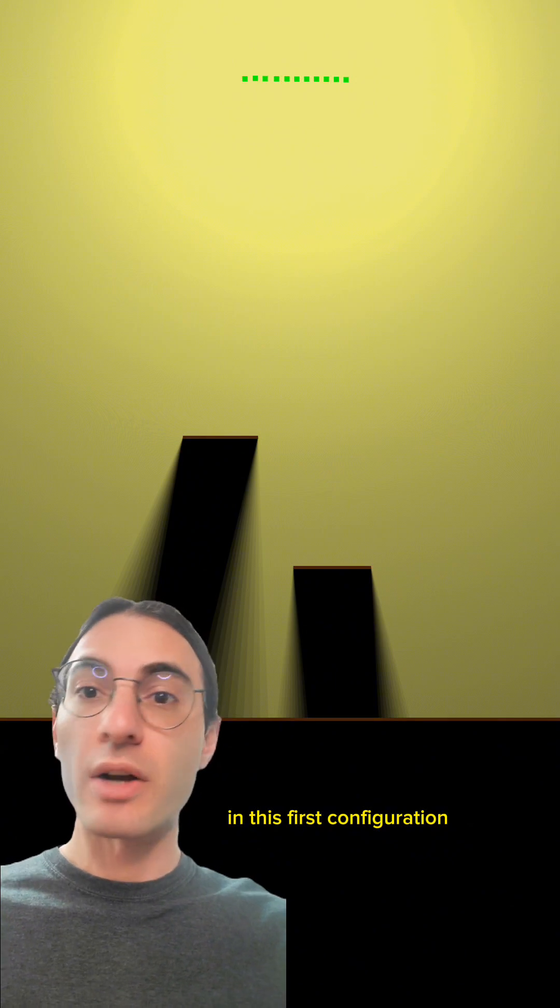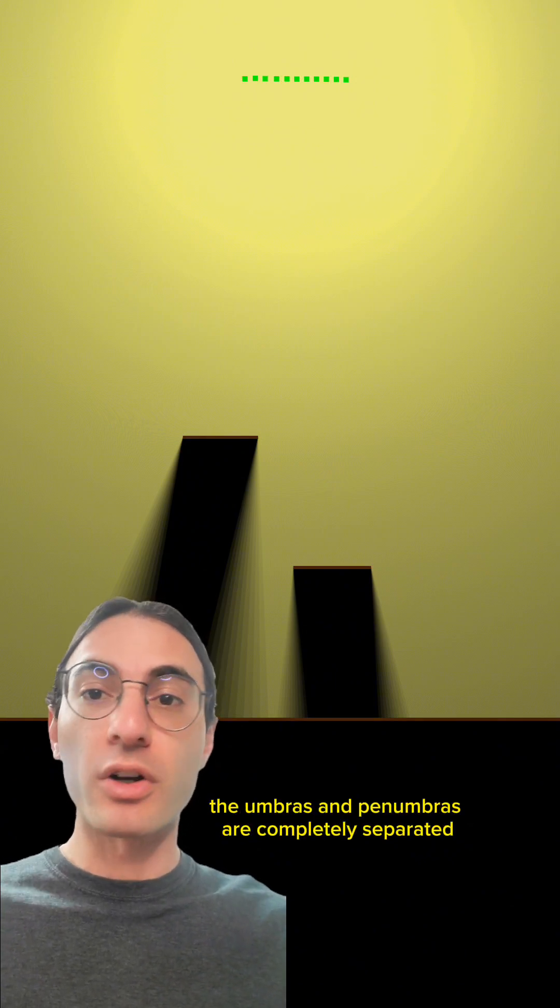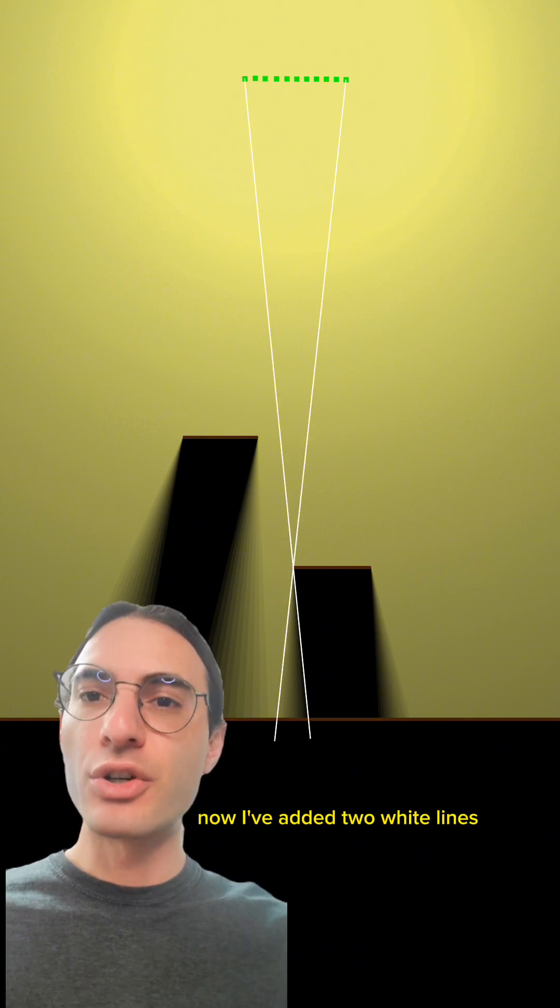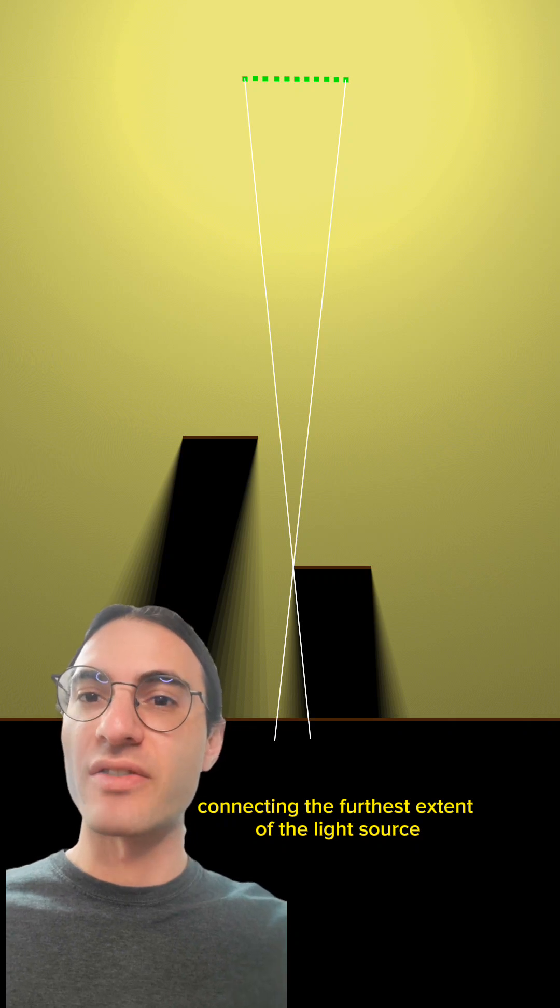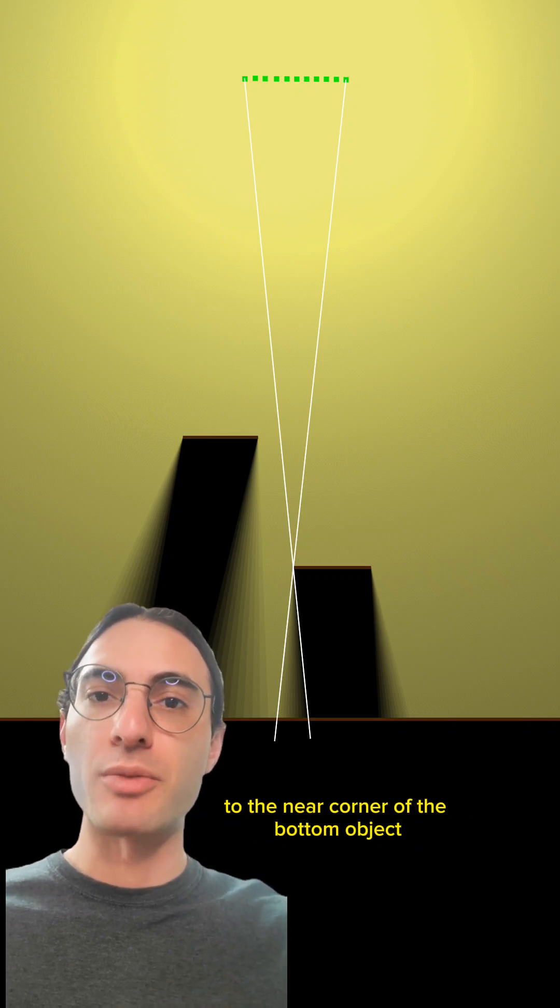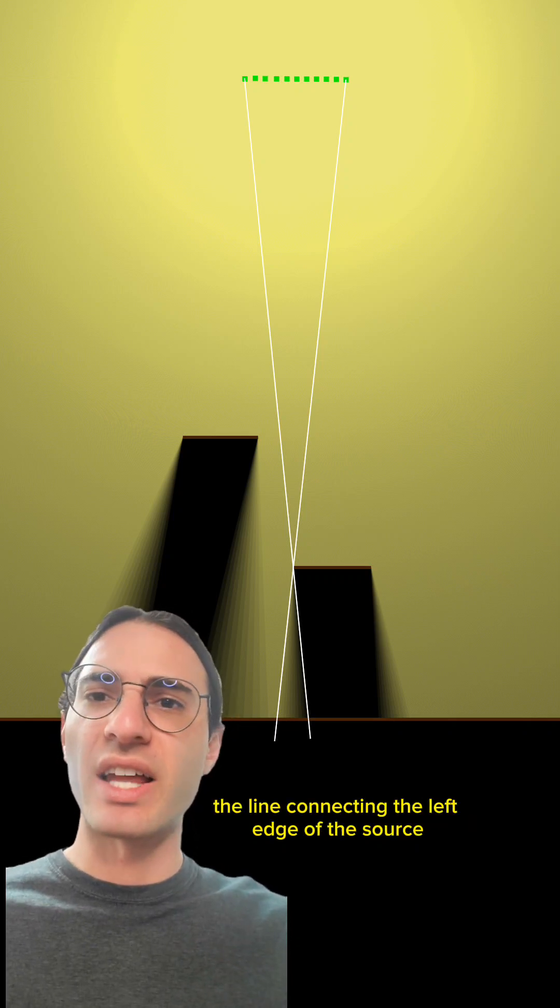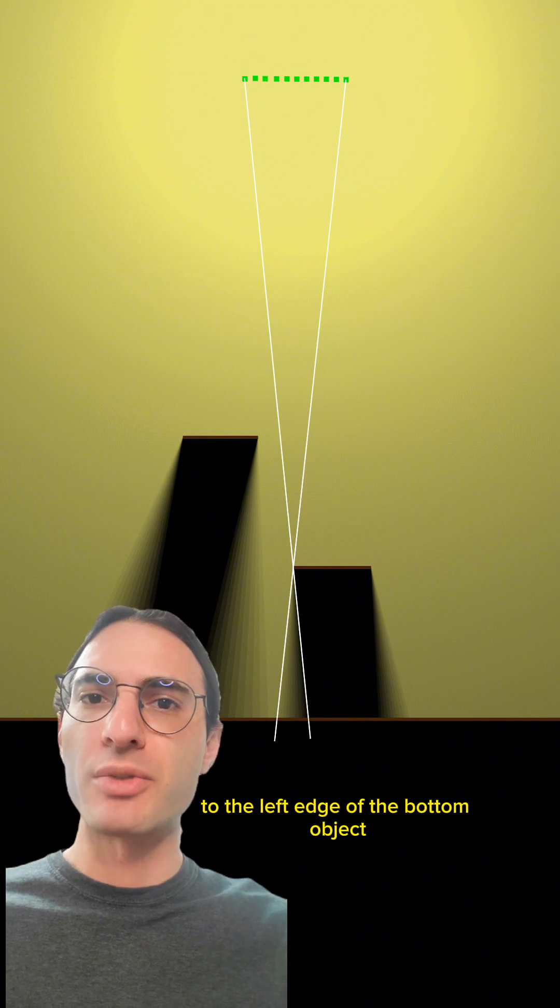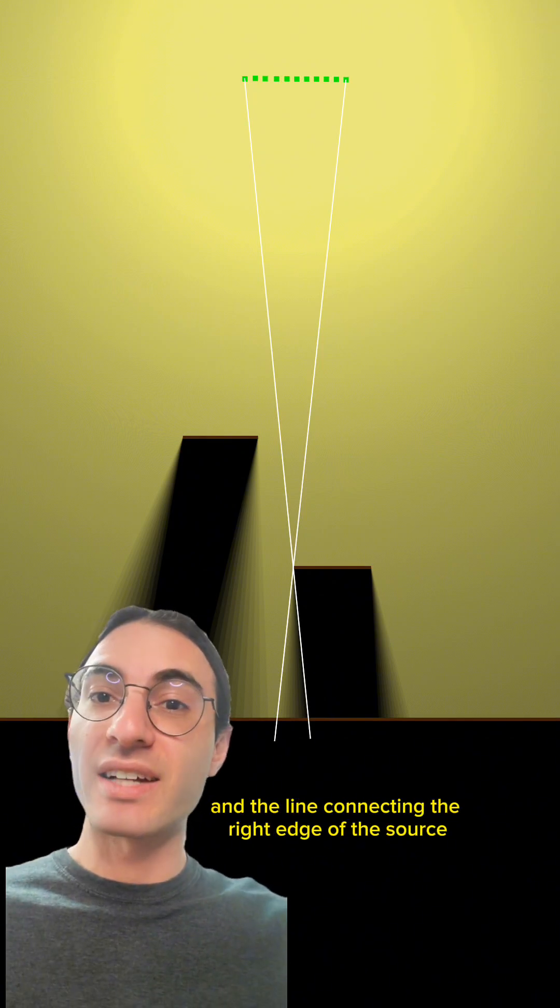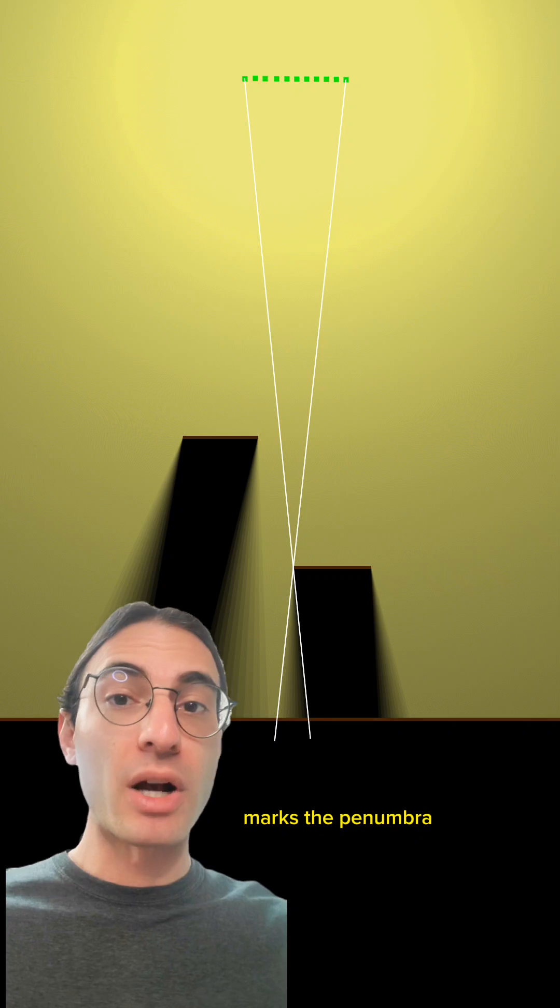In this first configuration, there is no blister. The umbras and penumbras are completely separated. Now I've added two white lines connecting the furthest extents of the light source to the near corner of the bottom object. Notice that the line connecting the left edge of the source to the left edge of the bottom object forms the line that marks the edge of the umbra, and the line connecting the right edge of the source marks the penumbra.